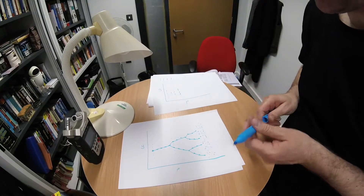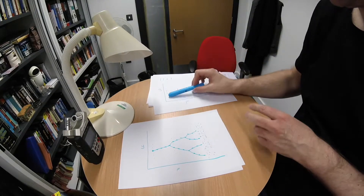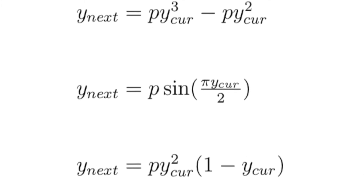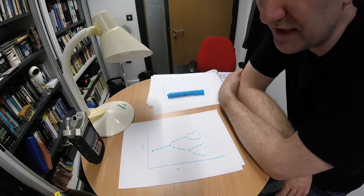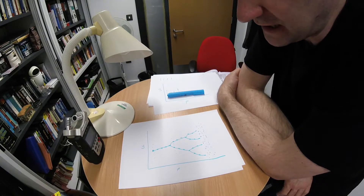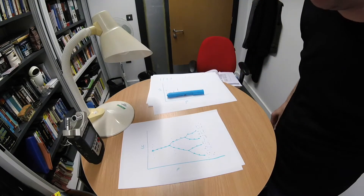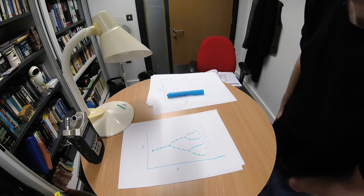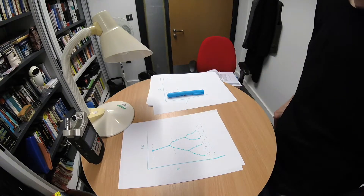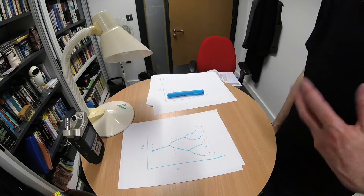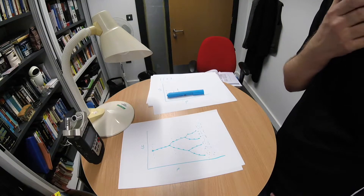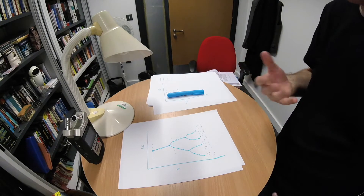Now the equations that do this are sometimes used to model real physical systems. We've seen one of these before — it's called the logistic equation or the logistic map — and it has been used to model population growth. There are other physical systems that we could model here: in electronics, in heat convection, and in fluid dynamics.